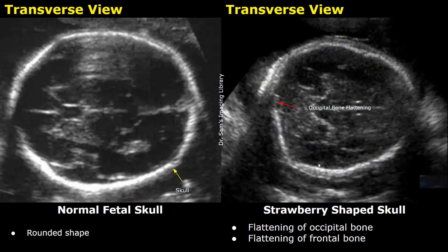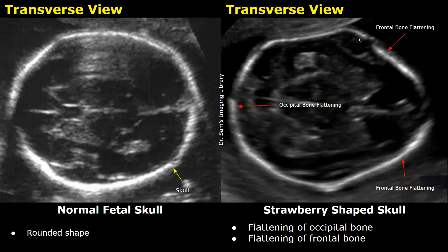The next feature is a strawberry shaped skull. The image on the left is a normal fetal skull with a rounded shape. In a strawberry shaped skull, there is flattening of the occipital bone — the occipital bone is flat. This feature is also associated with Trisomy 18. Flattening of the frontal bones can also occur along with flattening of the occipital bone, which gives a strawberry shaped skull.